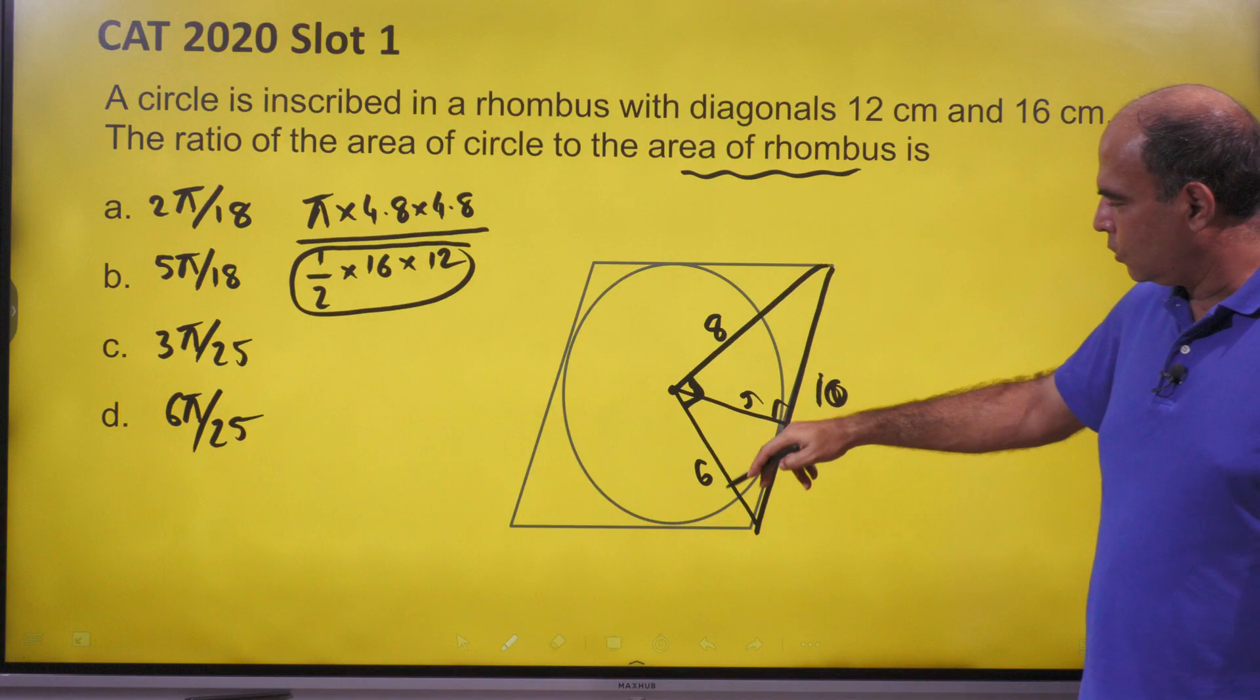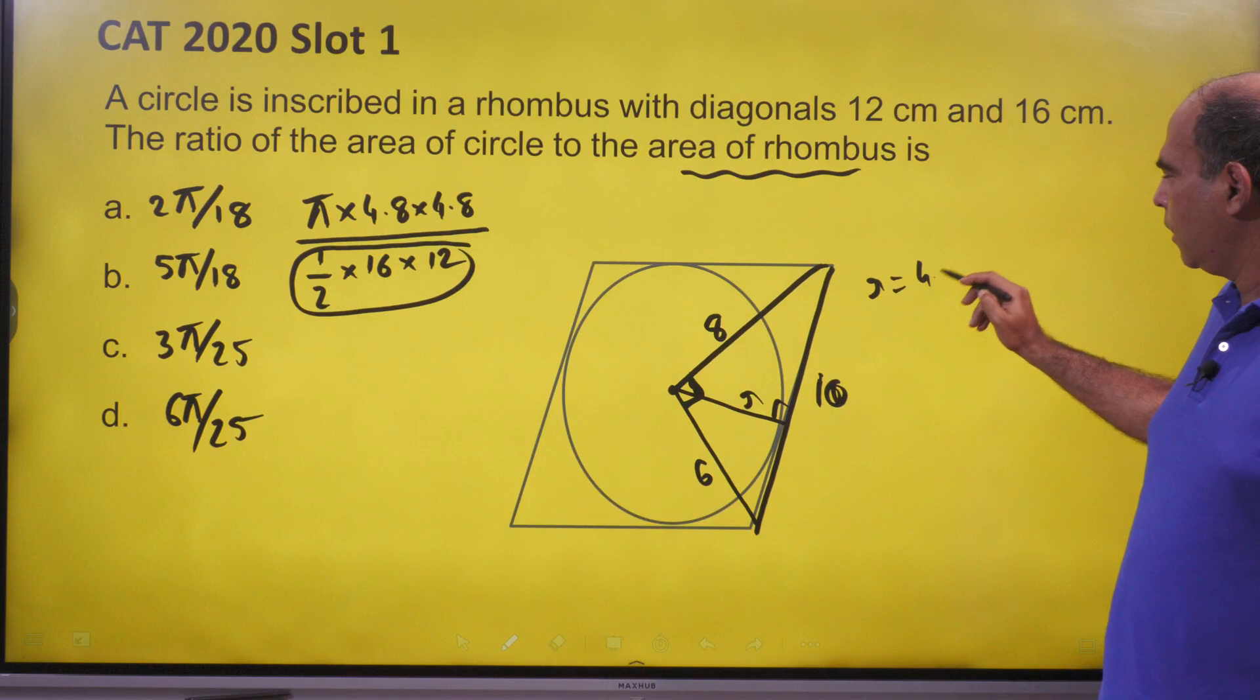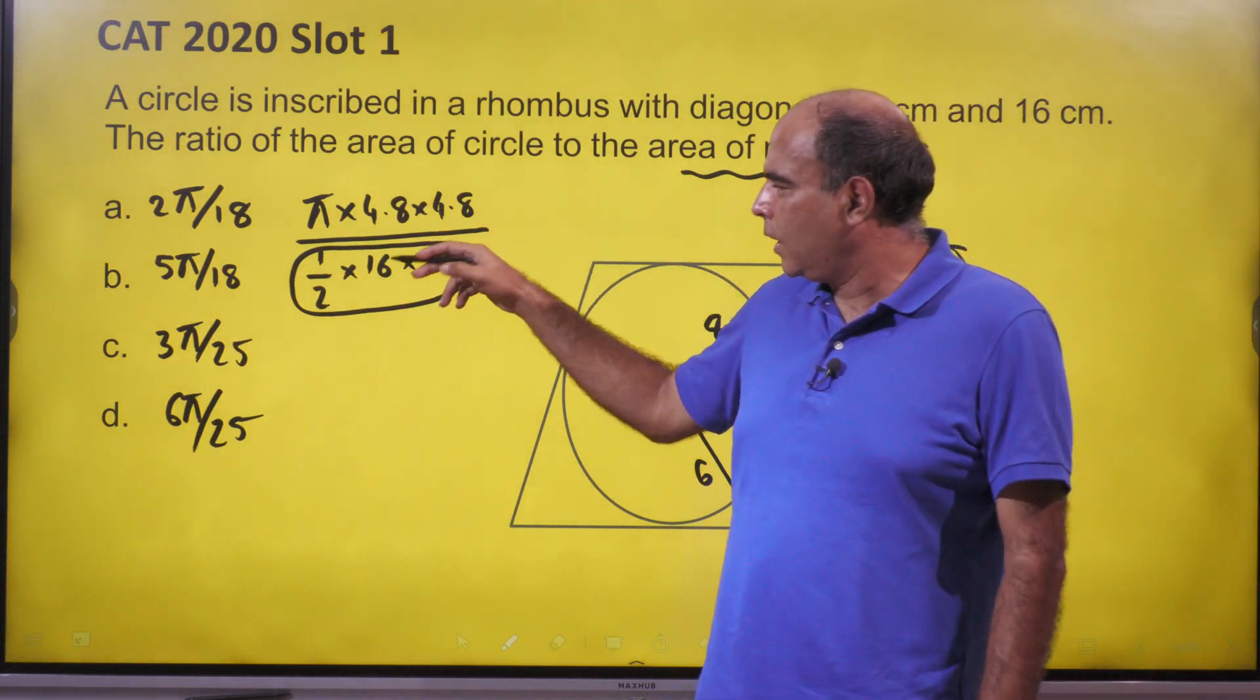So 6 × 8 equals 10 × radius, therefore the radius becomes 4.8. That's a 30-second thought. Once you do that, you plug in πr² there.